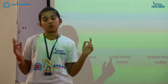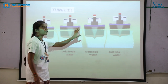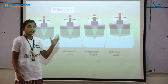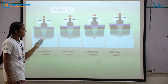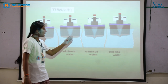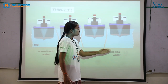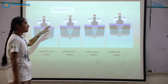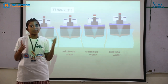Here is a question. If you observe these four figures, the water level is different in each figure. The water in the first figure is warm fresh water, the second is cold fresh water, the third is warm sea water, and the fourth is cold sea water. Can you guess why the same ship is immersed at different water levels in each case?